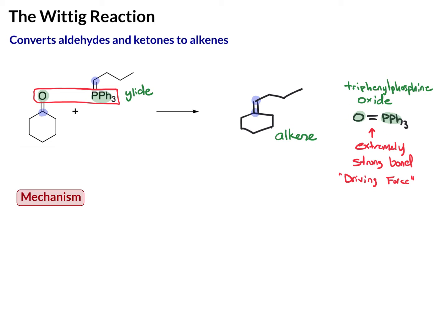So let's look at the mechanism, because up here this is just predicting the product. How do these things actually react? The first thing you need to know to understand the mechanism is that the ylide has two resonance structures. So let me just draw both ylide resonance structures — and let's keep it simple, I'm going to use an R group.